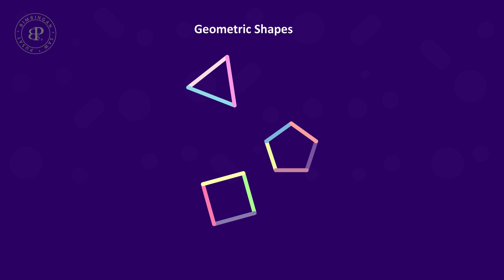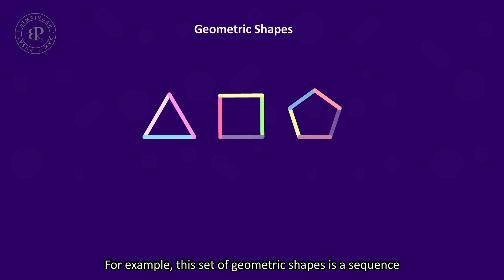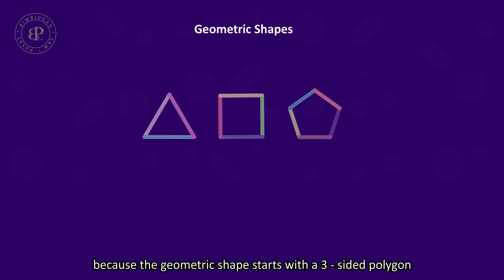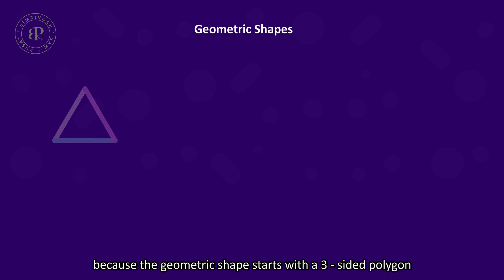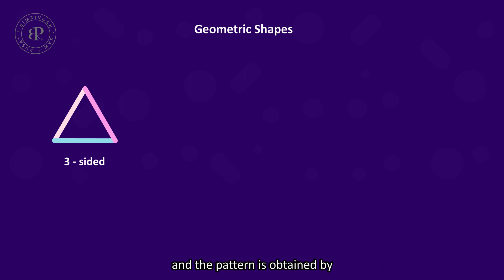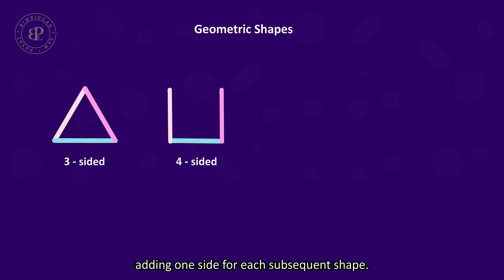For example, this set of geometric shapes is a sequence, because the geometric shape starts with a three-sided polygon, and the pattern is obtained by adding one side for each subsequent shape.